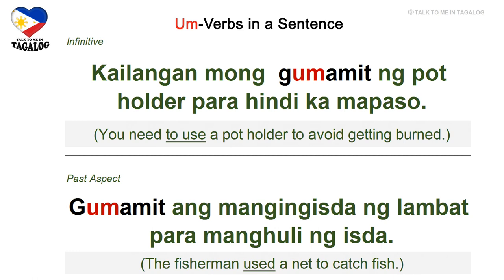Past aspect: gumamit ang mangingisda ng lambat para manghuli ng isda. Gumamit means used, mangingisda is a fisherman, lambat is net, manghuli is to catch, and isda is fish — the fisherman used a net to catch fish.